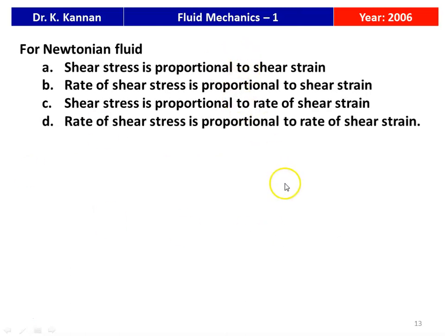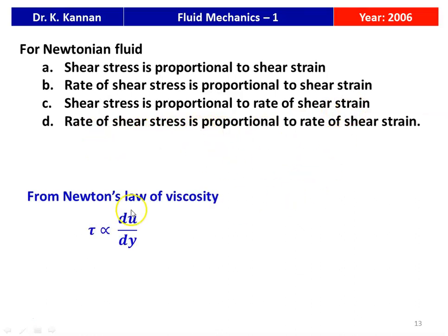Next question from the 2006 question paper: for a Newtonian fluid, shear stress is proportional to — the shear strain, the rate of shear strain, or other options. From Newton's law of viscosity, shear stress is proportional to du/dy, which is the velocity gradient. Therefore the answer is: shear stress is proportional to the rate of shear strain.